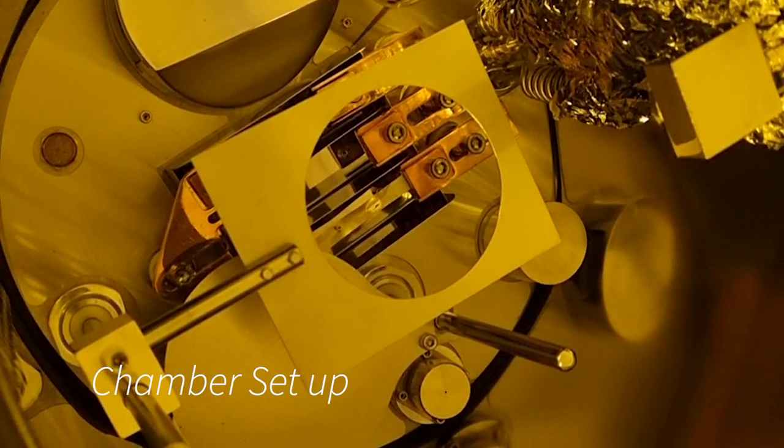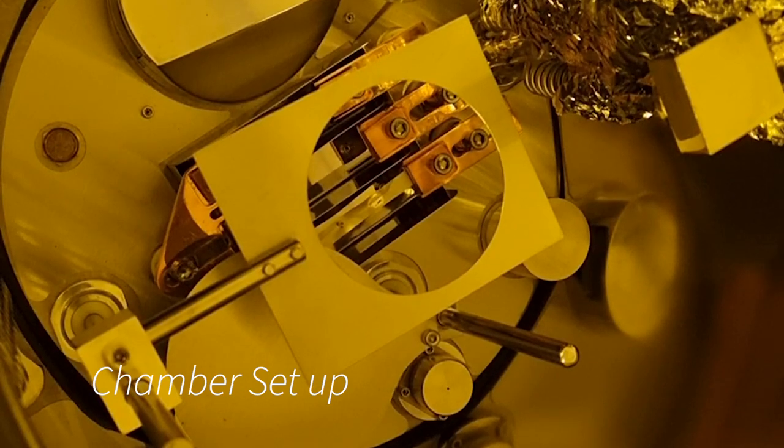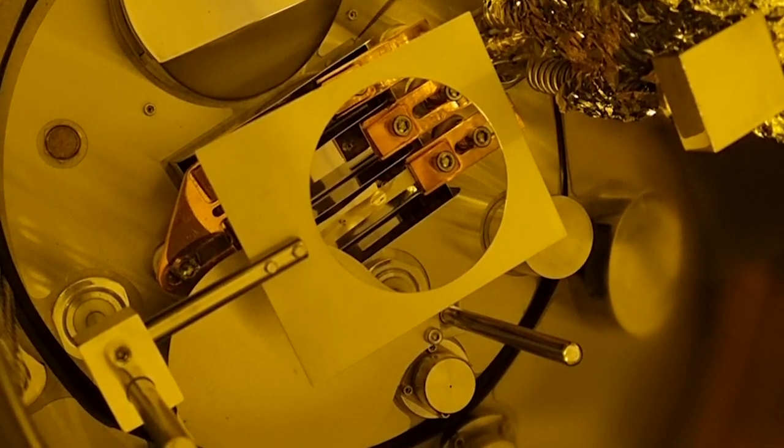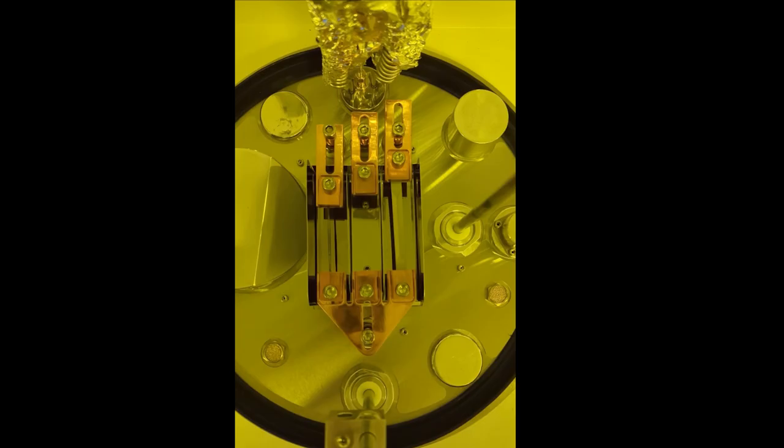This is the view inside the chamber. There are three copper contacts for three sources. On the left, we use a chrome rod and on the right, we have a boat with gold in it. There's no source in the middle.